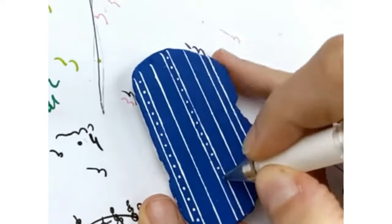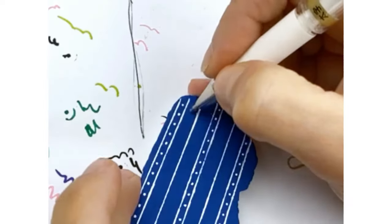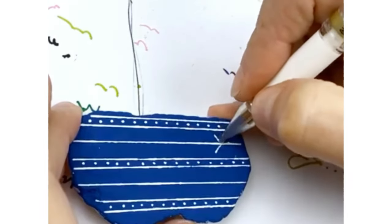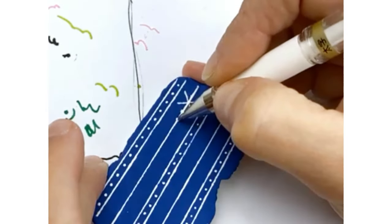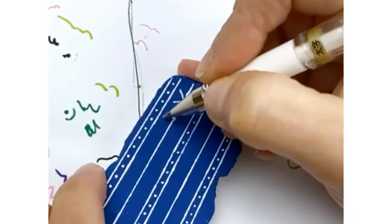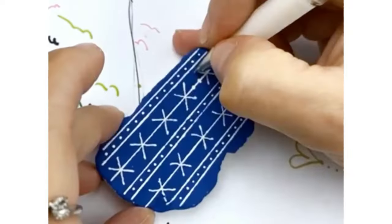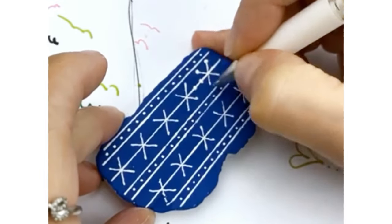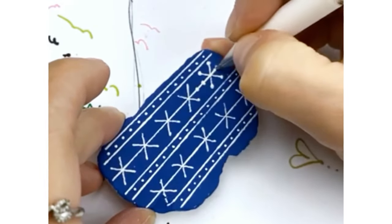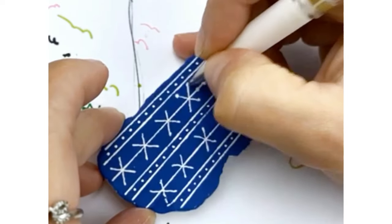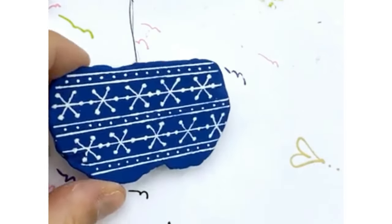Once you've got all of your lines on your rock, you can put little singular dots all the way down the rows that are really close together, and then we're going to create X's along our center lines. The center line is going to create the sixth line of our snowflakes. Creating little dots at the end of each of your lines will help separate the snowflakes along your design.